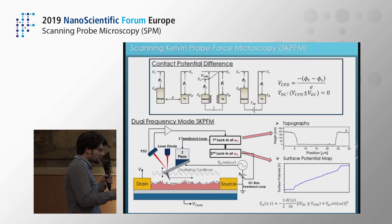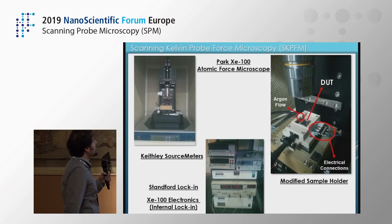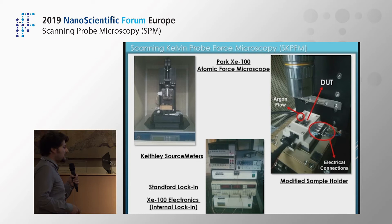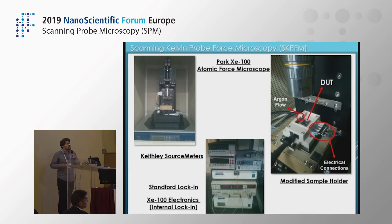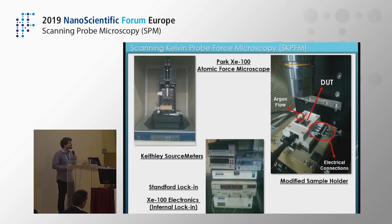We use our Park C100 system with a couple of source-measure units attached, which allows us to apply whatever gate voltages we want, ranging from about −100 to +100 V. We are limited in terms of what the Kelvin probe can feedback, so we can measure surface potentials ranging between −10 and +10 V, and this is what we typically observe in our perylene diimide OFETs.